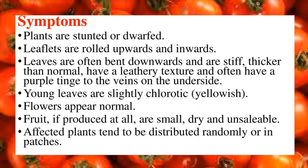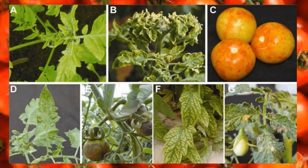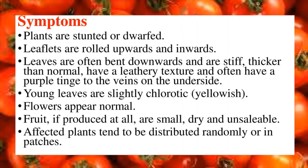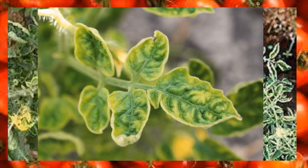Flowers normally appear and do not show any symptoms. Fruits, if formed at all, are small, dry, and unusable. Affected plants tend to be distributed randomly or in patches rather than the entire crop being affected. The main symptom of this disease is the inward curling and rolling of leaves, which become yellowish and then dry. The entire plant will eventually die due to the loss of photosynthetic and chlorophyll pigment, and the crop is completely lost.